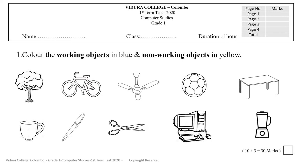Look at these pictures. Now take out your blue colour pencil and colour only the working objects in blue. Colour only the working objects in blue, and then take out your yellow colour pencil.